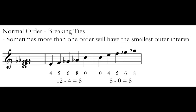Some other things that might come up with finding normal order: sometimes more than one order will have the smallest outer interval. Sometimes there's a tie here. I've given you a set with C, E, F, G-flat, and A-flat, or 0, 4, 5, 6, and 8. I found two different groupings that have the smallest outer interval of 8. One started on 4 and went up to 0, and I calculated that interval using mod 12. 12 minus 4 gave me 8. I had another version starting on C, on 0, going up to 8. My outer interval was 8. I've got a tie. What am I supposed to do?